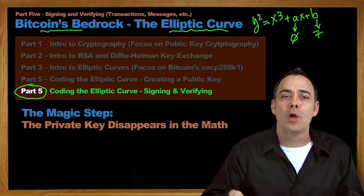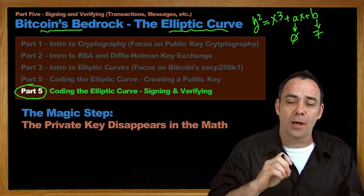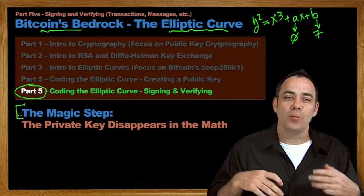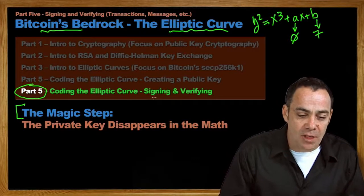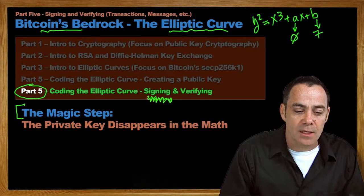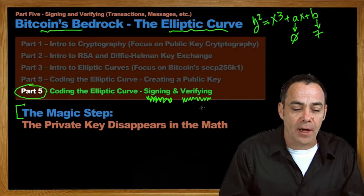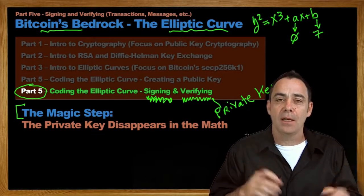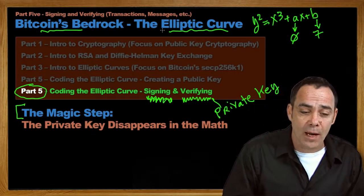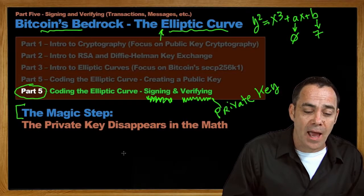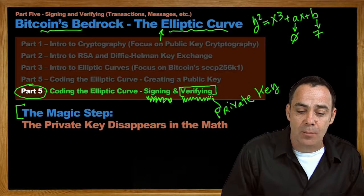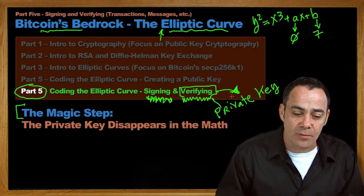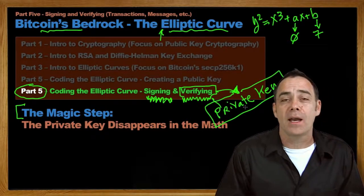The modern age of cryptography was brought in by this ability to do public key cryptography. Specifically, once you have the public key, you can do this thing that we call the magic step, where you've signed the transaction or signed the message, and now you're going to verify it — but without having the private key. By simply having the public key, a hash of the message, and all the parameters of the elliptic curve, you can actually verify whether the message was sent by the person with the private key and know for sure they possess it, even though you yourself do not.